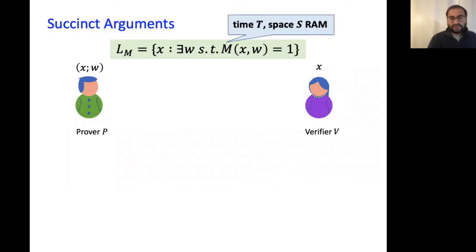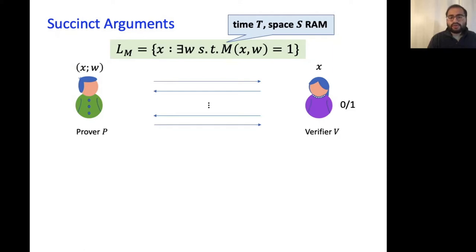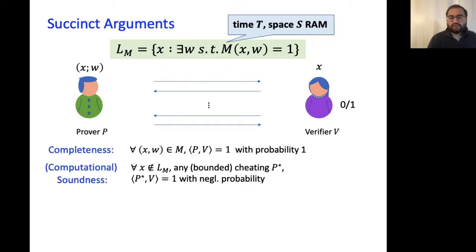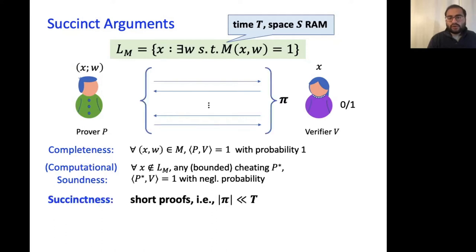An argument for a language L accepted by some non-uniform random access machine, or RAM for short, is an interactive protocol between a prover and a verifier where the prover, given an instance from the language along with the witness, attempts to convince a verifier that the instance is in the language. Standard arguments have two properties: completeness and soundness. More relevant to this talk is succinctness, which requires the proof size — the transcript of the interaction — to be significantly smaller than the running time of the RAM machine.